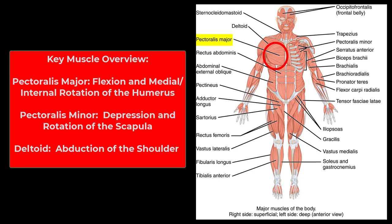Next we have the pectoralis major — your big pec muscles. They're involved in forward flexion and medial or internal rotation of the humerus. Think of a push-up: arms start out and end up flexed forward and rotated. Any time you see a major, there will also be a minor. The pectoralis minor depresses the scapula.